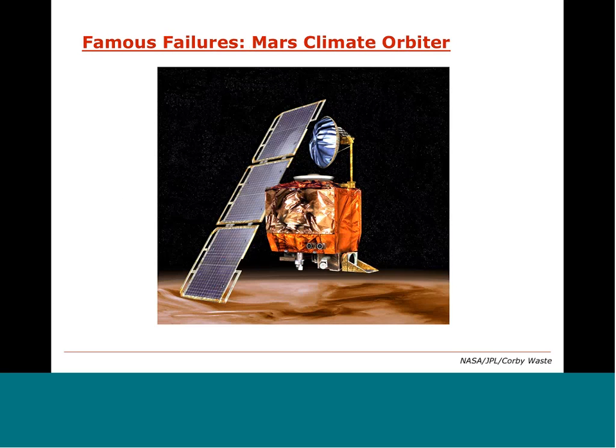There are some famous verification and validation failures. One is the Mars Climate Orbiter, a probe launched by NASA in 1998 to study climate conditions on Mars. They lost communication about a year after the launch. The software that calculated the impulse by the thrusters gave results in imperial units, while the software calculating the trajectory expected input in SI units. This was a verification failure — the equations were wrong — and ultimately the probe passed through the atmosphere and disintegrated.